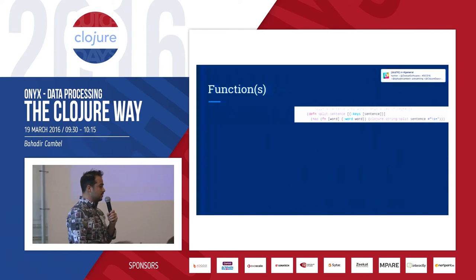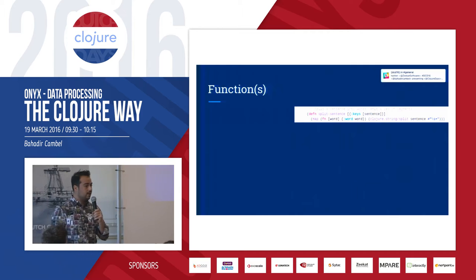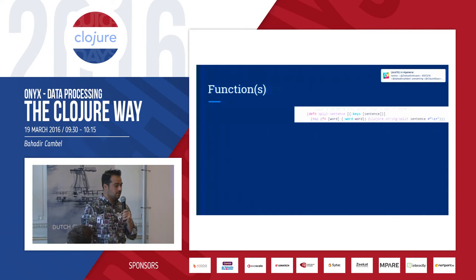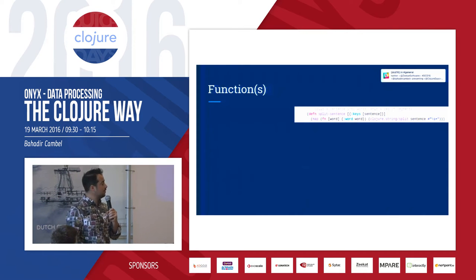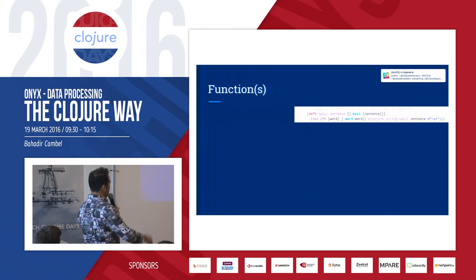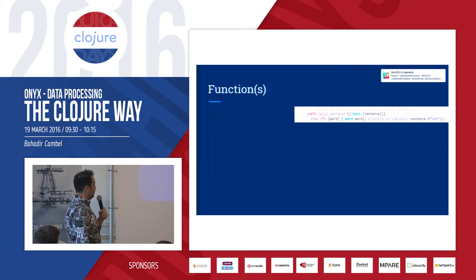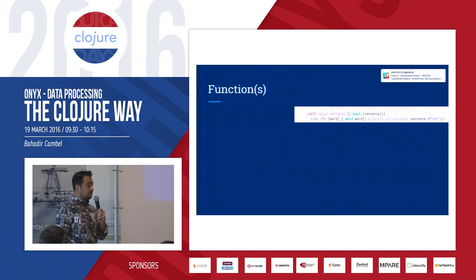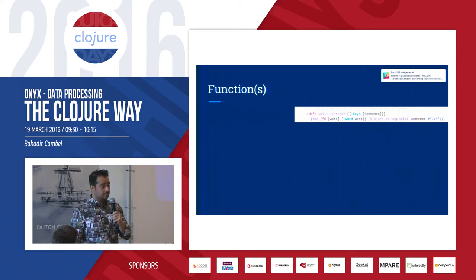The next step is writing your bare minimum Clojure function — that's it. You receive a map, do your processing, and return a map or a list of maps.